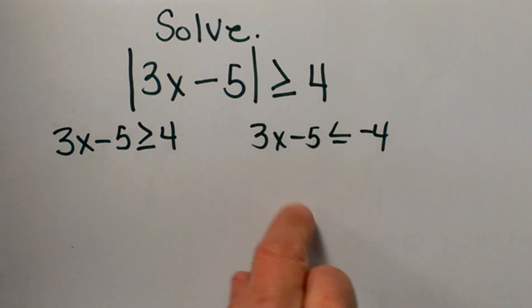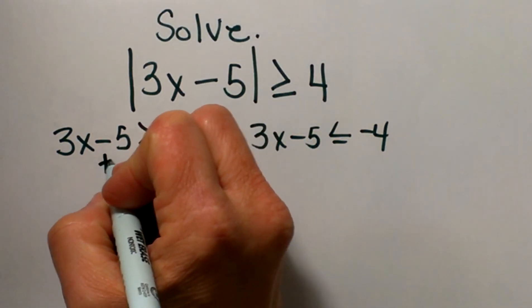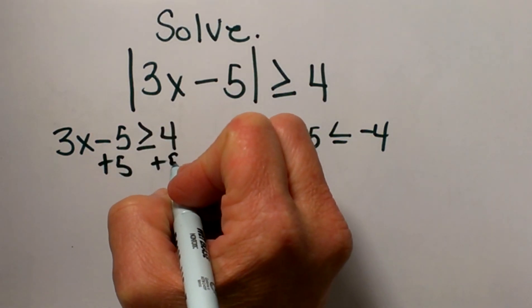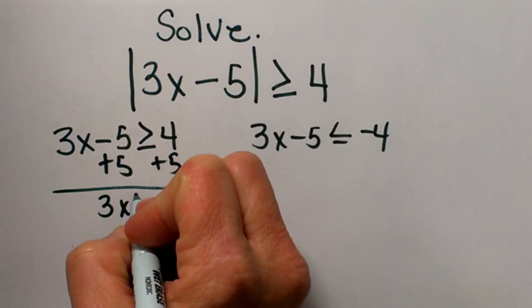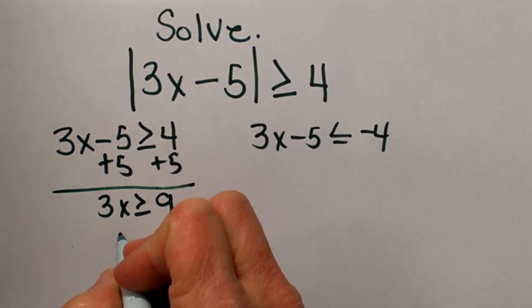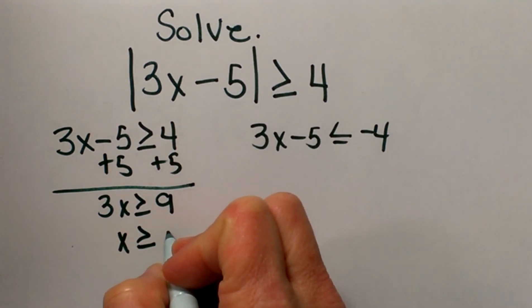Let's solve each case separately. For the first one, I'm going to add 5. This is a two-step equation. So I get 3x ≥ 9, which means x ≥ 3.